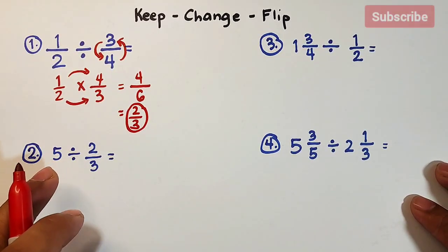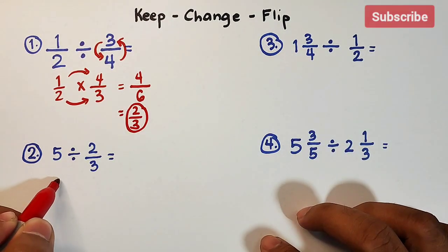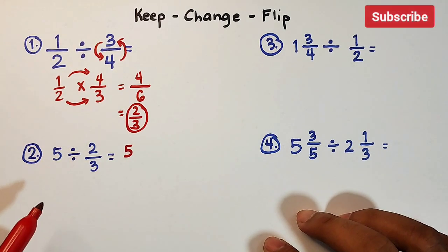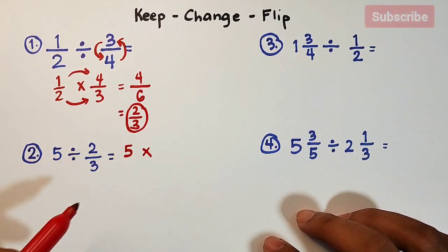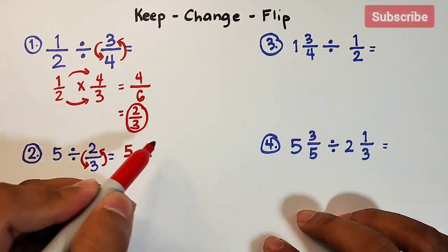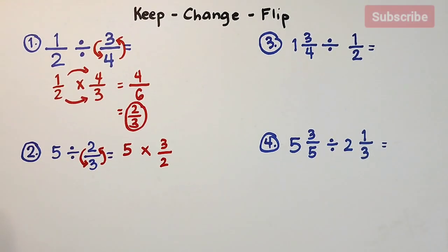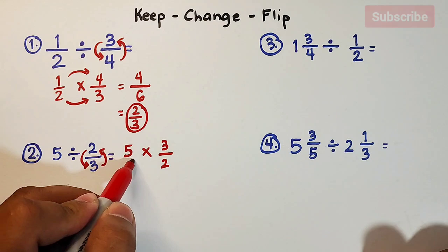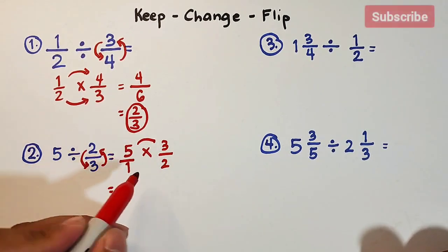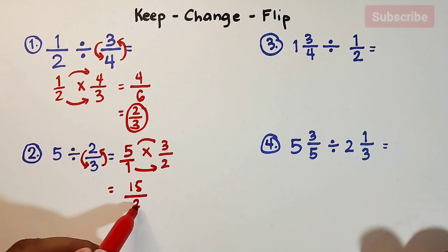For number 2, we have 5 divided by two-thirds. Keep 5, change to multiplication, flip — interchange the position to get 3 over 2. The whole number 5 can be expressed as a fraction: 5 over 1. Multiply: 5 times 3 is 15, over 1 times 2, which equals 15 over 2.